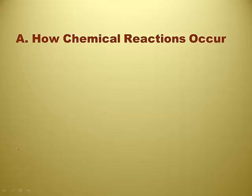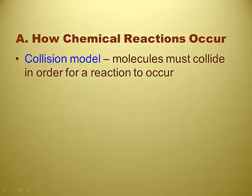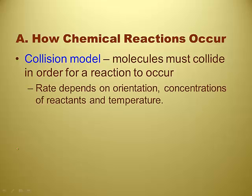How chemical reactions occur — this is nice and easy. You have a collision model: molecules must collide in order for a reaction to occur, and they must collide in the right orientation. So the rate at which a reaction happens is going to be dependent on the orientation, the concentration of the reactants, and the temperature. The more you've got, the more chance of a successful collision. The hotter the temperature, the faster they're moving, so the quicker they're going to hit each other. And if you've got the right orientation, a reaction is going to occur.